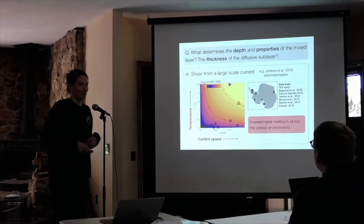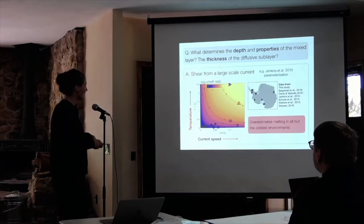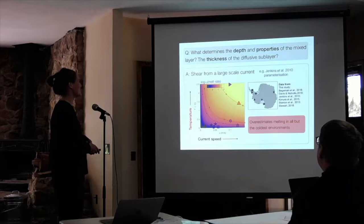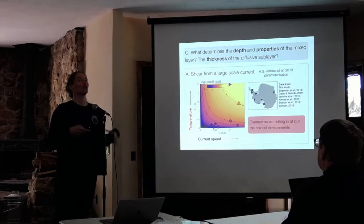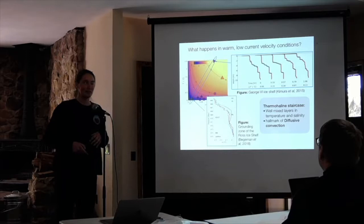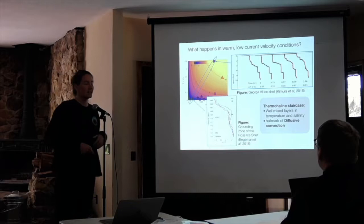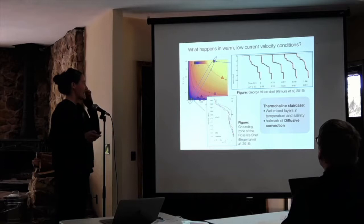Our measurements from beneath the Amery Ice Shelf are among the best. I'm going to focus on a couple of cases with particularly warm and/or low-energy ocean conditions. One of these spots — CTD casts from the Weddell Sea and from George VI Ice Shelf — have in common really low melt rates, warm ocean conditions, and super cool thermohaline staircases: well-mixed layers in temperature and salinity. These are hallmarks of a process called diffusive convection — that's the process I'm talking about today.